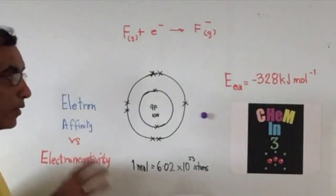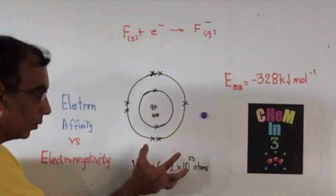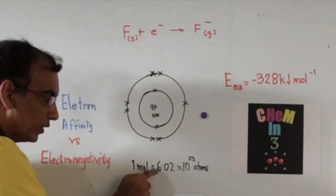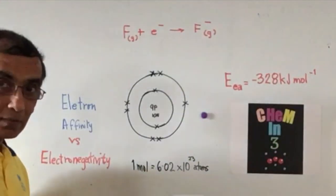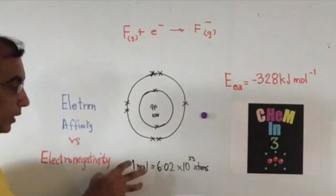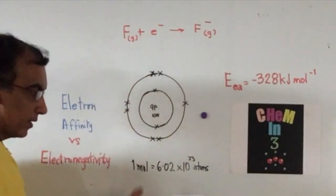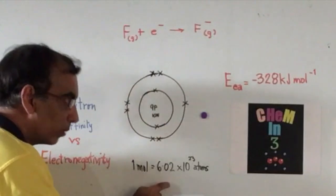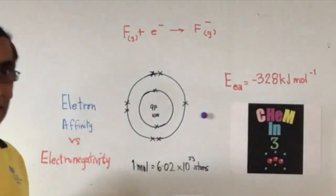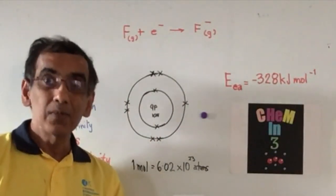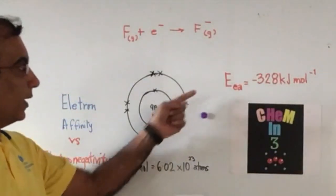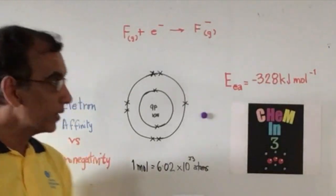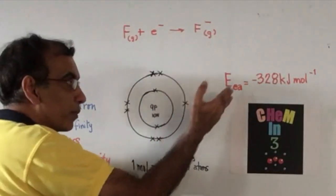So the amount of energy that's released when a mole of these atoms, which is 6.02 × 10²³ fluorine atoms, when they receive electrons, that number of electrons, and they form that number, one mole of fluoride ions, the system releases energy. And this is why we have a negative sign to show that the system loses energy to the surroundings, and we have an exothermic process.